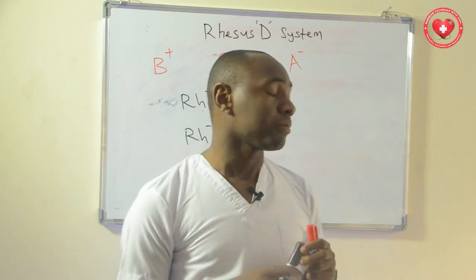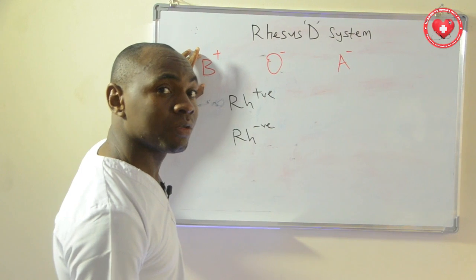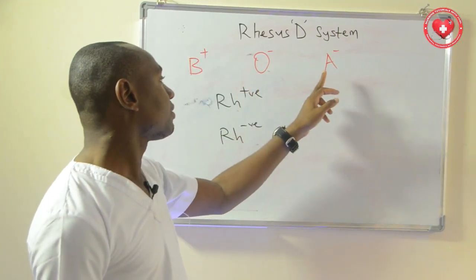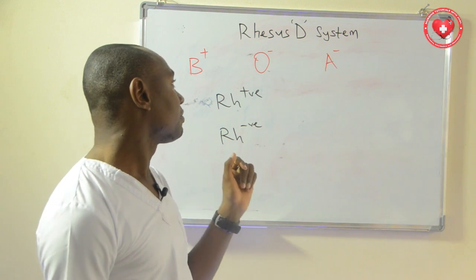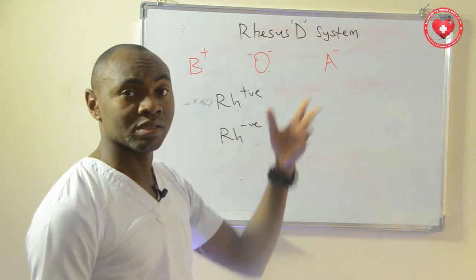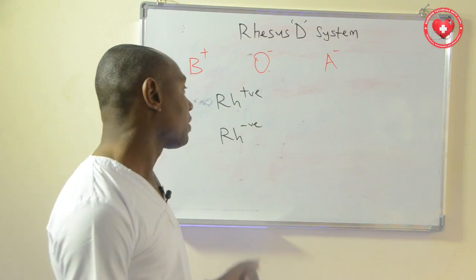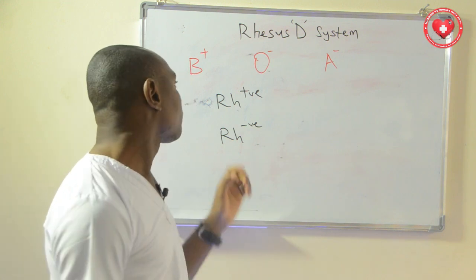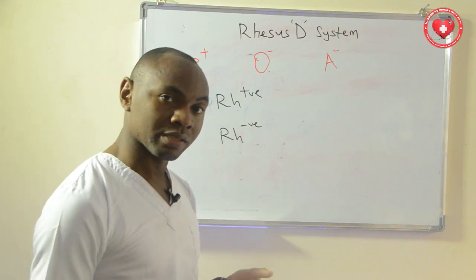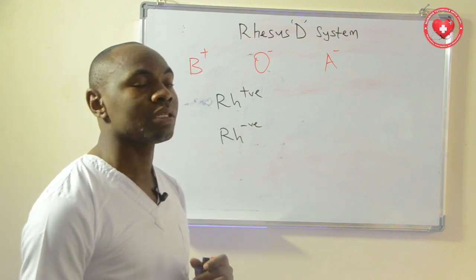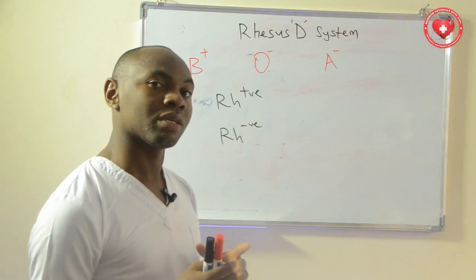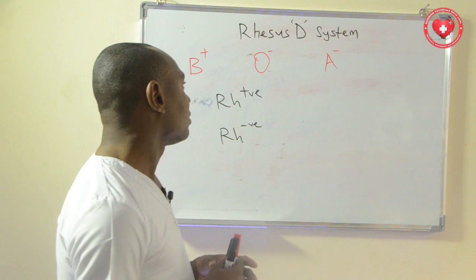Now instead of just B, you have B positive, you have O negative, you have A negative. That is where the concept of Rhesus D system comes to play. We discovered that there is a substance that is also located or attached in the red blood cell, that is usually found in the red blood cells of individuals. That substance sometimes is present and sometimes is absent.